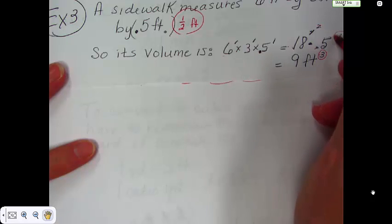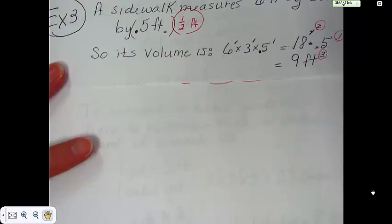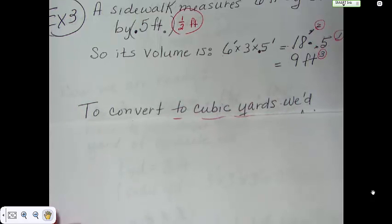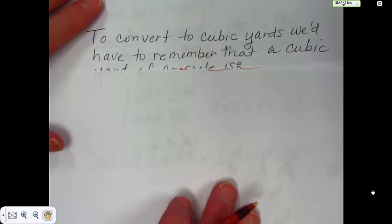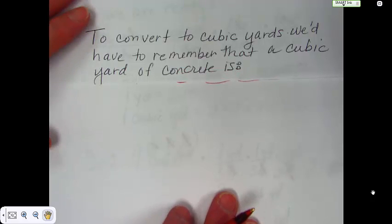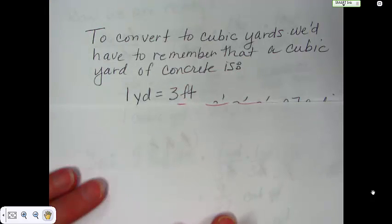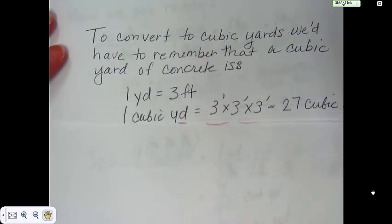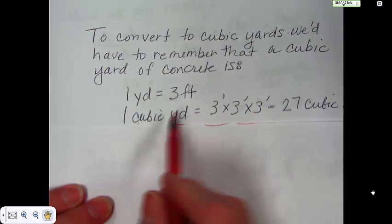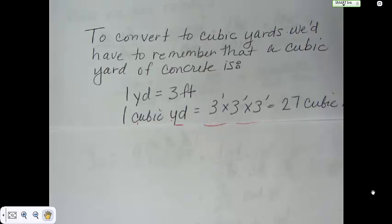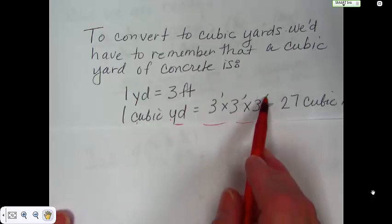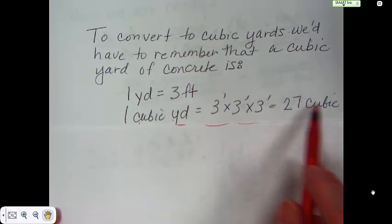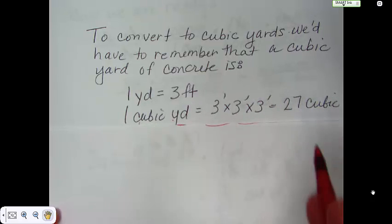To convert to cubic yards, we need to remember that 1 yard equals 3 feet. A cubic yard is 3 feet by 3 feet by 3 feet, which is 27 cubic feet, or feet times feet times feet.